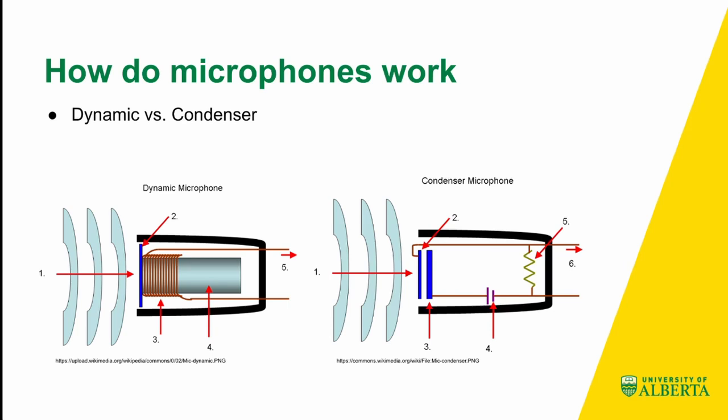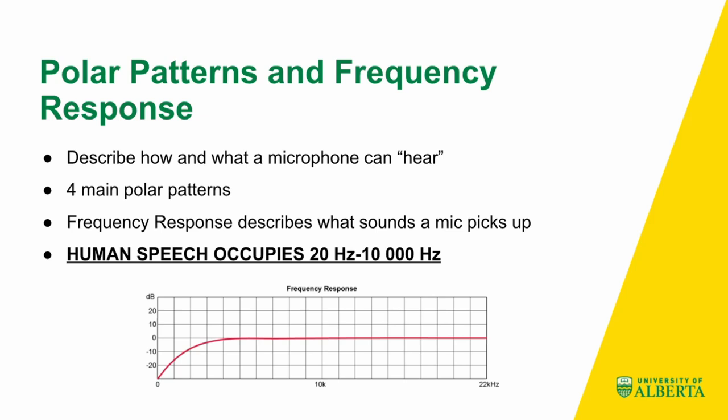For human speech, it generally doesn't matter what you're using. We're generally quiet enough that we can use dynamic microphones, but if you want really the best possible recording apparatus, you'll often want to work with a condenser microphone because it can handle people being very quiet. Now, turning to polar patterns and frequency responses — these are two measures that describe how and what a microphone can hear. Let's talk about frequency response first.